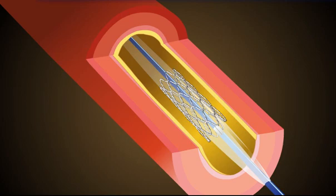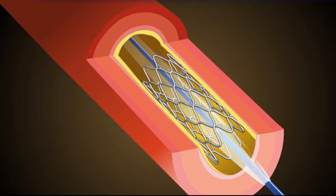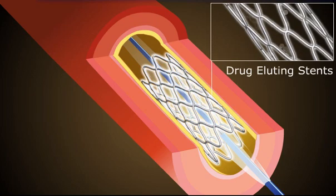It is placed on a balloon catheter and guided to the blockage. When the balloon inflates, the spring-like stent expands and remains in the artery permanently to hold it open and improve blood flow to the heart. A new advancement in angioplasty is the drug-coated stent.